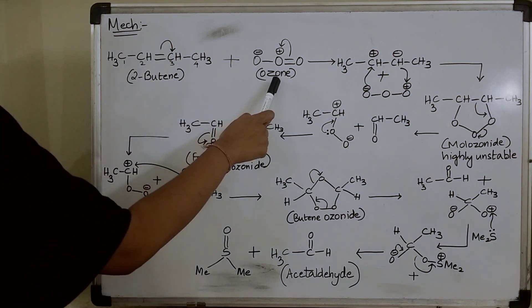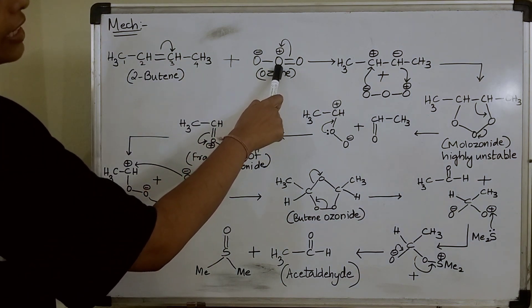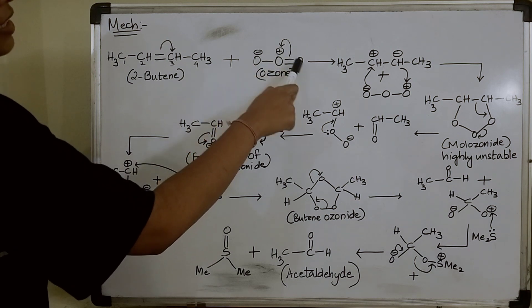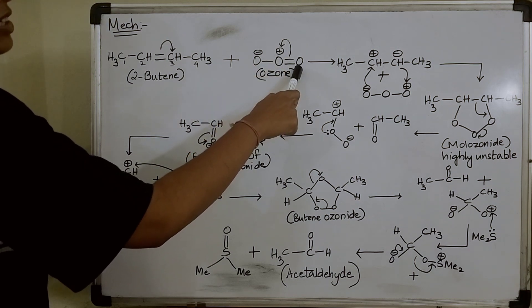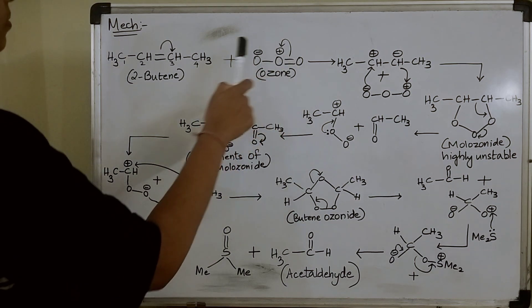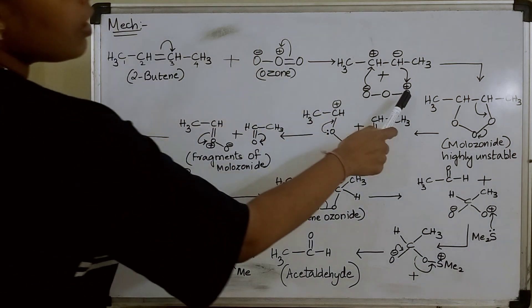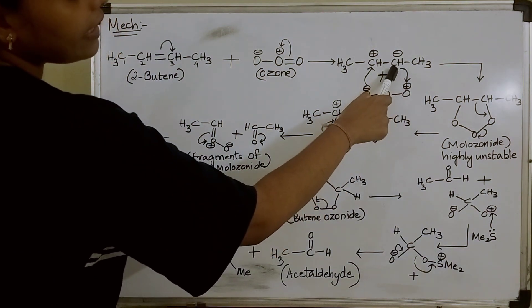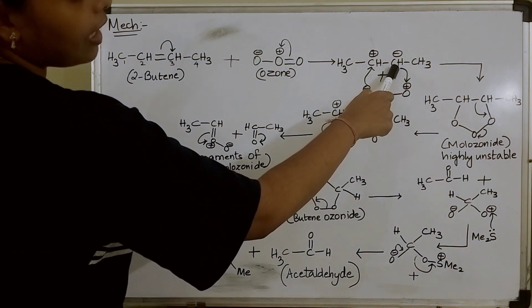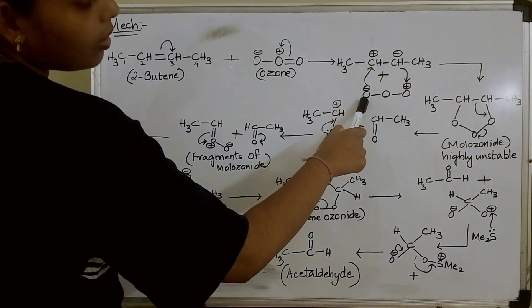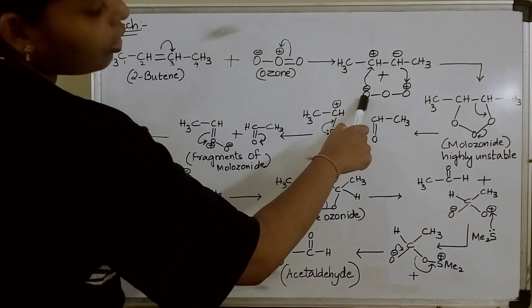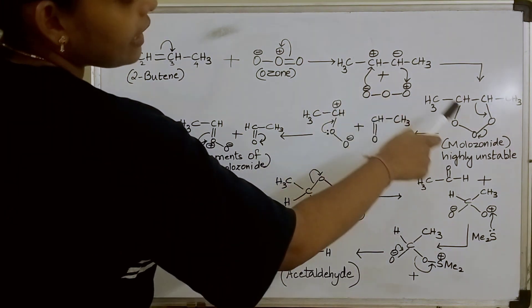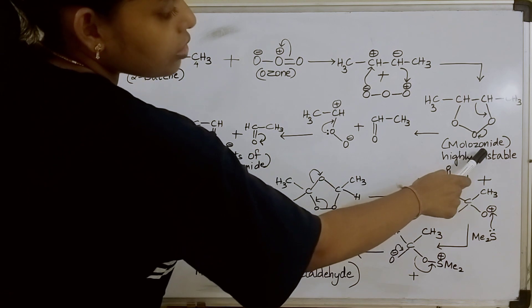In the same way, as oxygen here is having a positive charge, this bond is shifted here leaving this oxygen positively charged. Now this positively charged oxygen will form a bond with the negatively charged carbon, and this negatively charged oxygen will form a bond with the positively charged carbon, giving us molozonide.